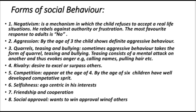Third, quarrelsome teasing and bullying: aggressive behavior sometimes takes the form of quarreling, teasing, and bullying. Teasing consists of a mental attack on another, evoking anger — for example, calling names. In bullying there is physical pain, for example pulling a friend's hair. Fourth, rivalry: characterized by the desire to excel or surpass others, appearing at age 4 or 5. Fifth, competition: competition for prestige is apparent at age 4, and by age 6 most children have a well-developed competitive spirit. Sixth, selfishness: the young child is egocentric; only after playing with others does he learn to submerge self-interest in group interest. Sixth, friendship and cooperation: signs of cooperative behavior appear when the child is about 4, while cooperative group work is not understood before age 6.